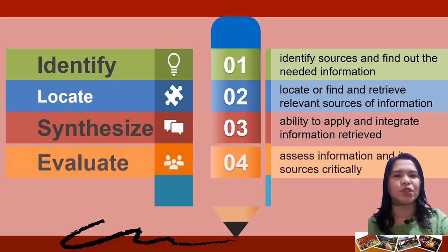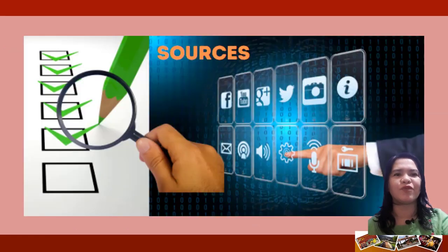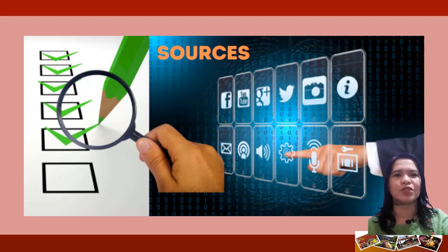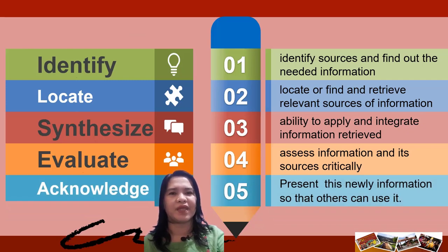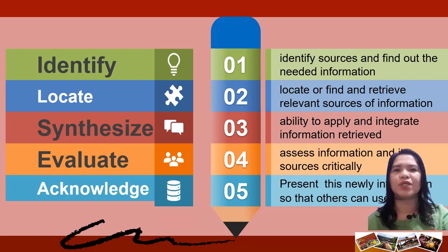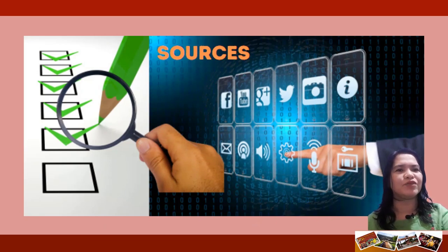Fourth is to evaluate. A media literate person can assess information and its sources critically. It is important to understand the various types of sources and formats and how to utilize them, as well as to assess the appropriateness and reliability of the information. Lastly is present or acknowledgement. An information literate person acknowledges this newly acquired knowledge so that others can use it. By this, we determine the audience's needs and the best presentation format. You should know the standards and criteria for presenting information, as well as the proper citation of sources.